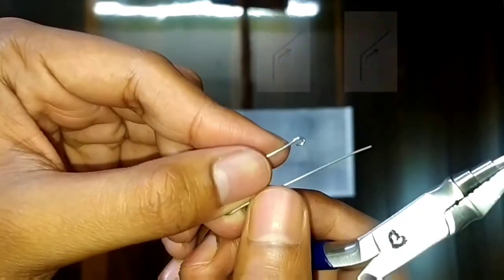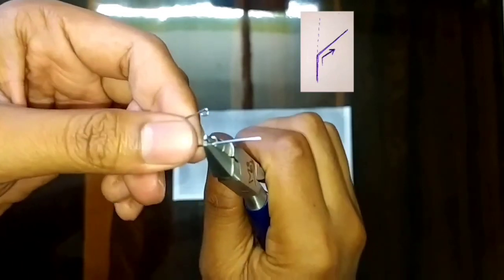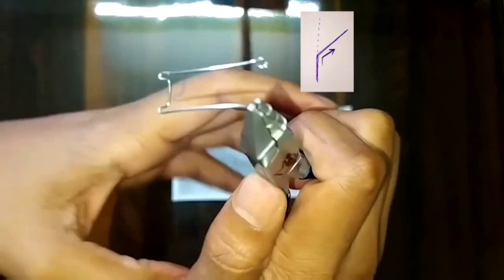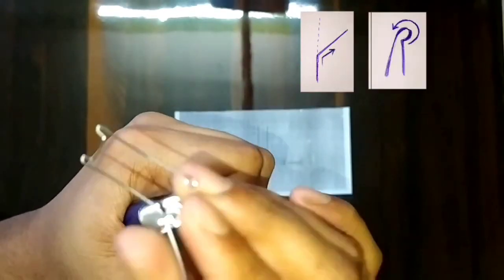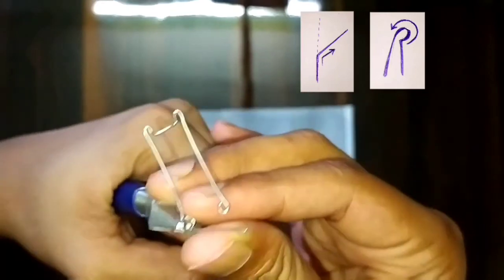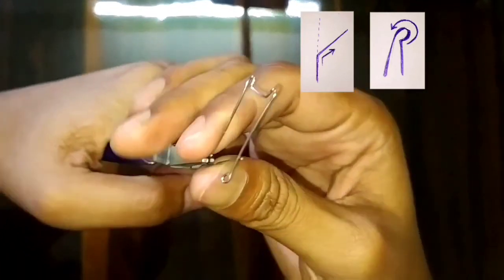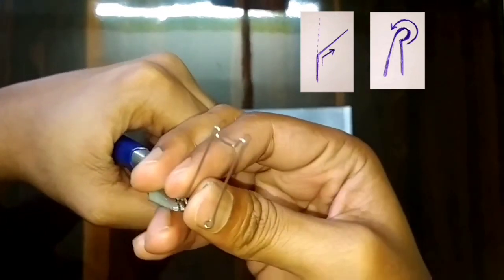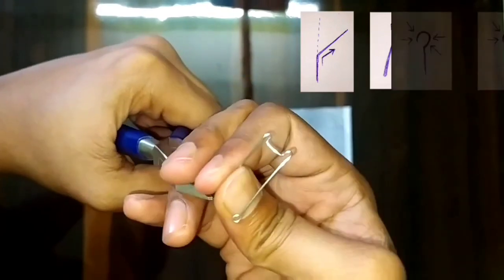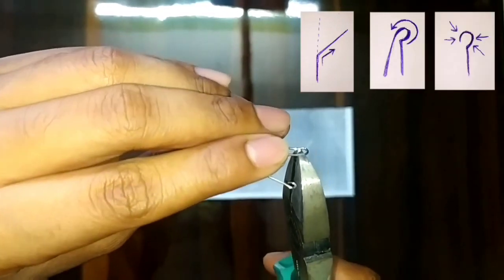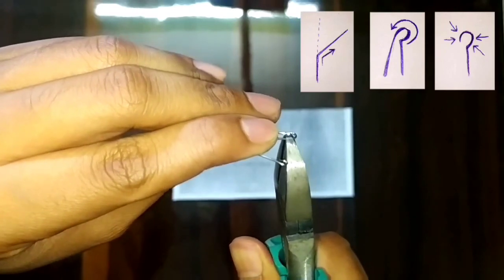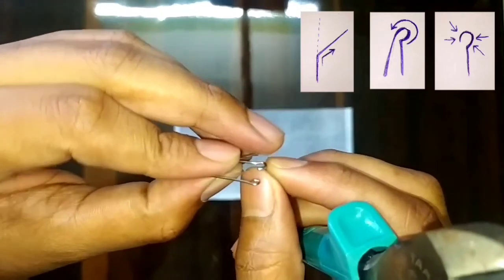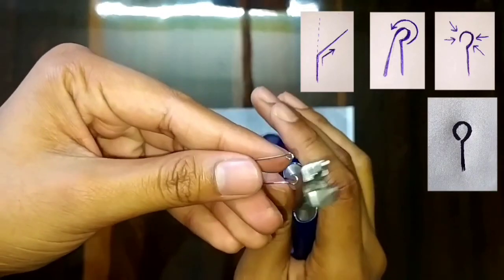Do similarly on the other side also. Follow simple steps: just bend the wire outside and roll it along the round beak, then cut the wire from the curvature and press it with the plier. You can see here the tag is formed.